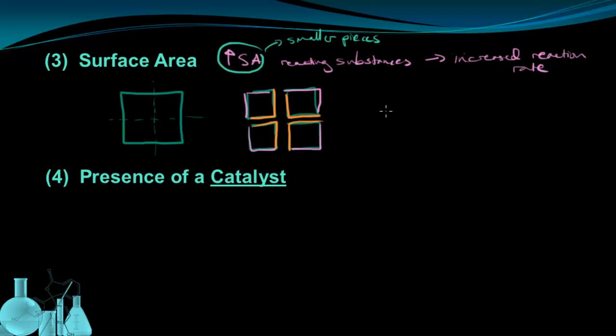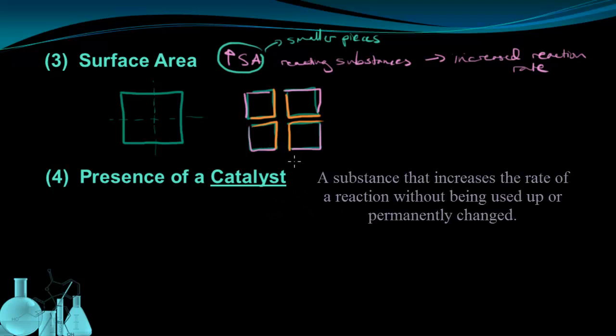The next factor that has a major effect on reaction rate is the presence of a catalyst. And a catalyst is a substance that increases the rate of reaction without being used up or permanently changed. And the way it works is pretty interesting. A catalyst works by lowering the activation energy of a reaction. So essentially, it makes it easier to have a successful collision. And if it's easier to have a successful collision, you're going to have more successful collisions.